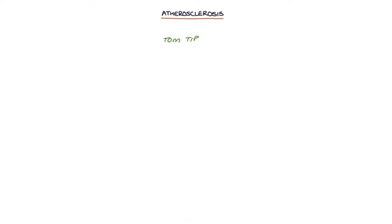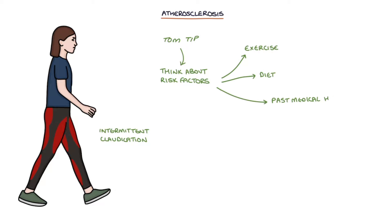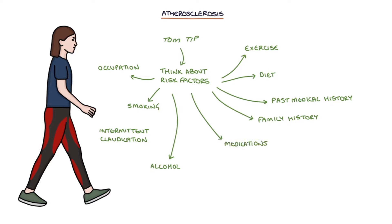A tip for you: think about the risk factors when you're taking a history from someone with suspected atherosclerotic disease, such as someone presenting with intermittent claudication. Ask about their exercise, diet, past medical history, family history, occupation, smoking, alcohol intake, and medications. This will help you perform well in exams and when presenting to seniors, as you'll be able to classify them as high risk or low risk for the condition you're suspecting.